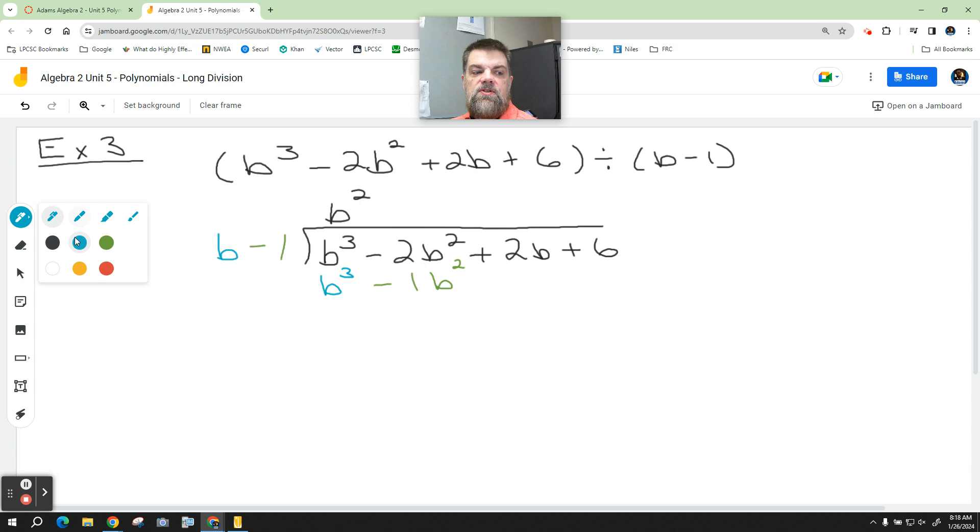So anyways, what did we used to do? What's the next step? We would subtract, right? But remember when Mr. Adams said we do the opposite? So this is a positive b cubed. So what does it become now? A negative b cubed. This is a negative 1b squared. What does it become now? A positive.